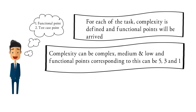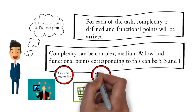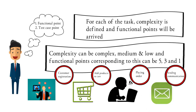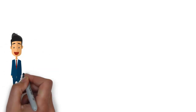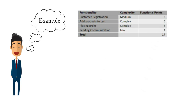Now we will take a scenario and do the estimation. I am using the same scenario used in our earlier sessions. The different functionalities of an online shopping website are: customer registration, adding products to the cart, placing an order by the customer, and sending communication to the customer. Assume that these are the lowest level of functionalities. The first step is to find out the complexity for each of these functionalities.